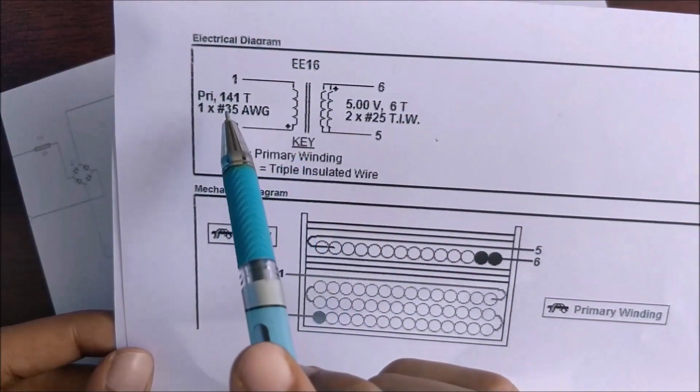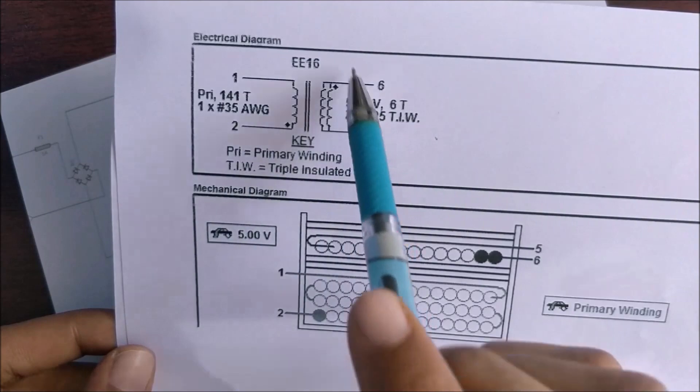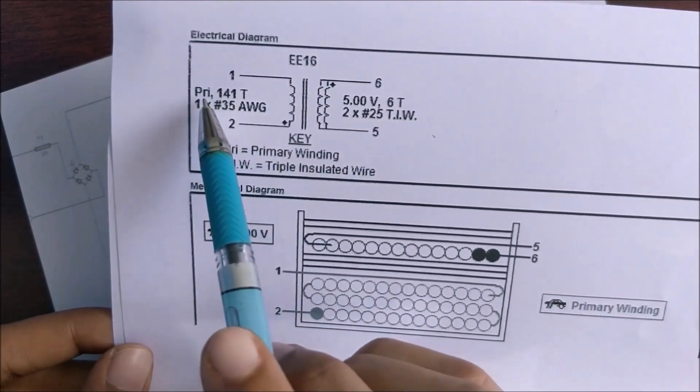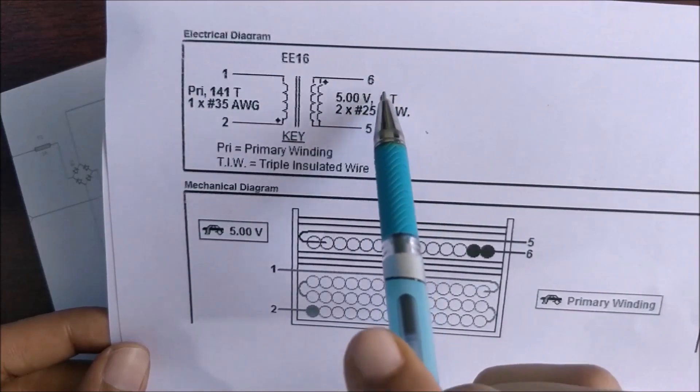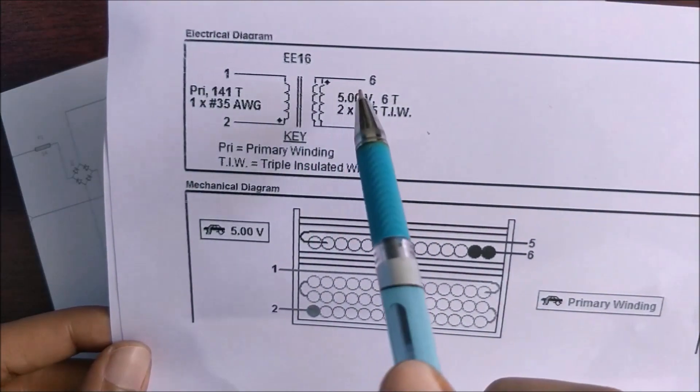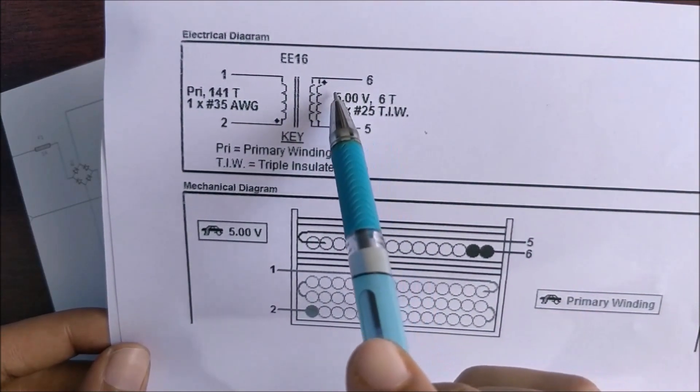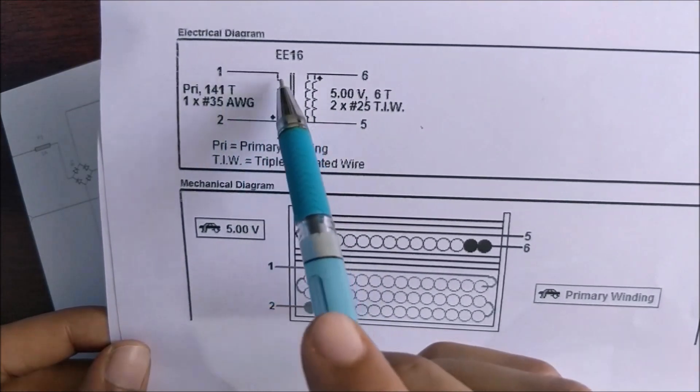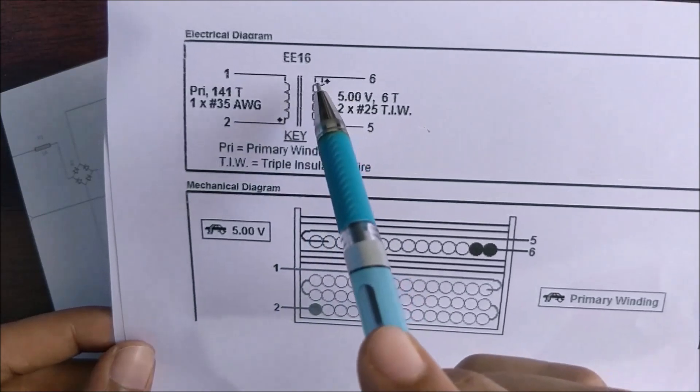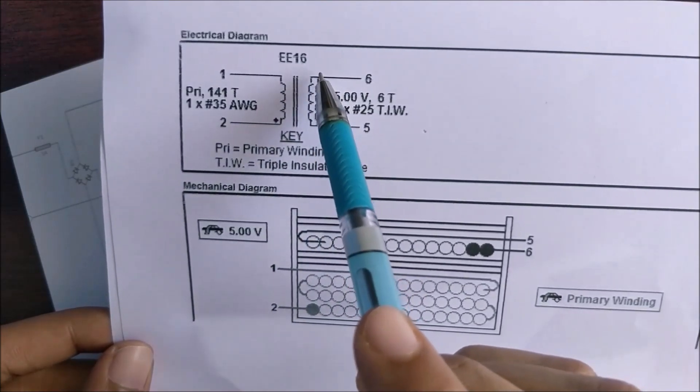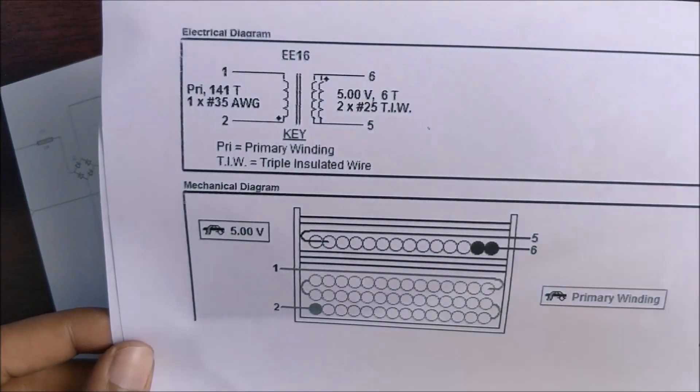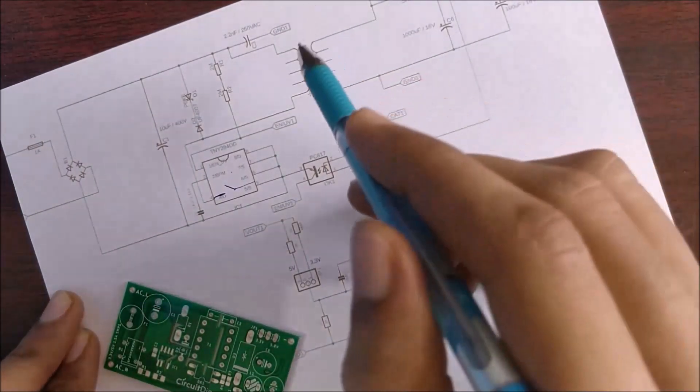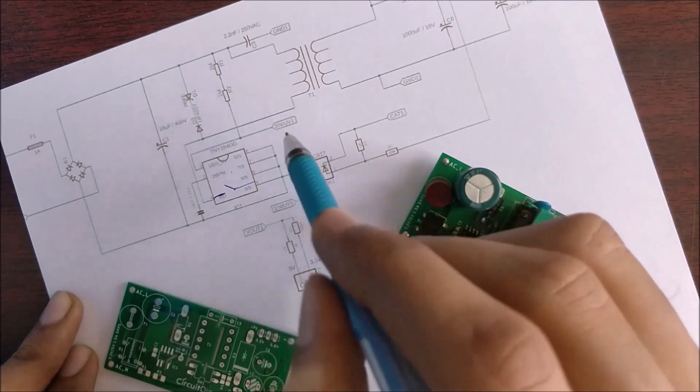As you can see our transformer has one primary winding and two secondary windings. There will be about 141 turns on the primary side and about 6 turns on the secondary side and the output voltage on the secondary will be 5 volts. You can also see the dot convention rules over here. There is a dot here which means that current will leave through this coil and there's a dot here which represents that current will exit through this coil.